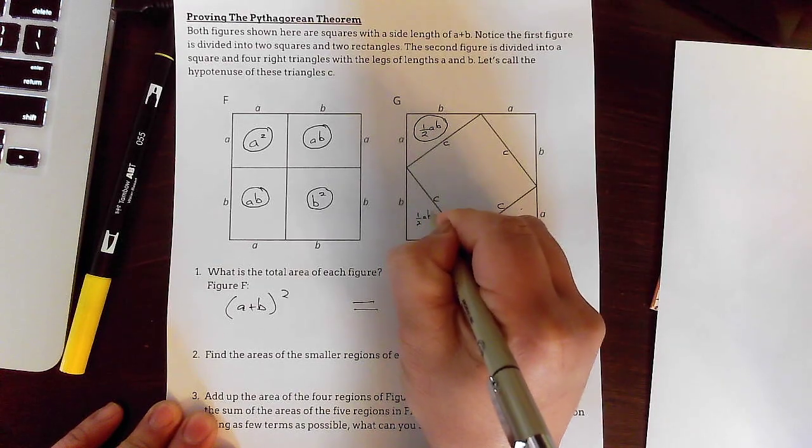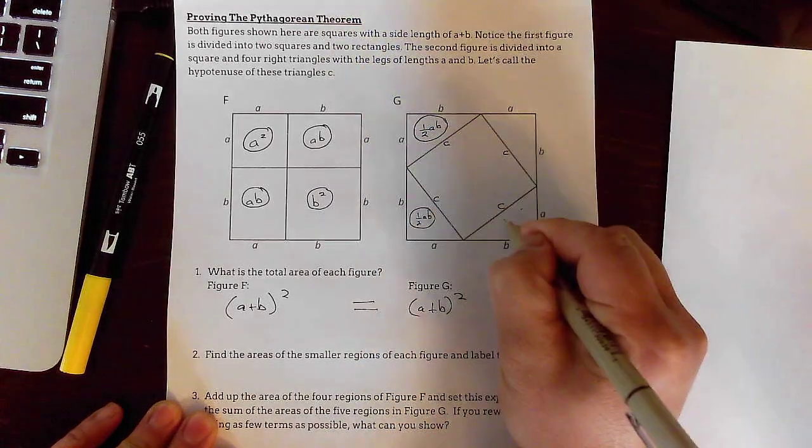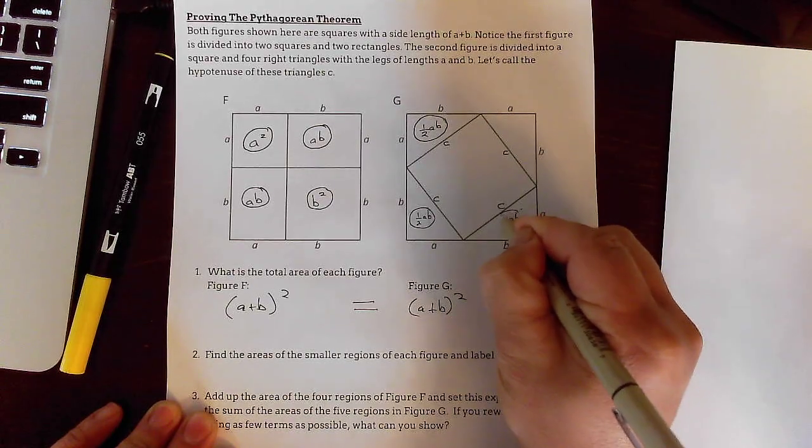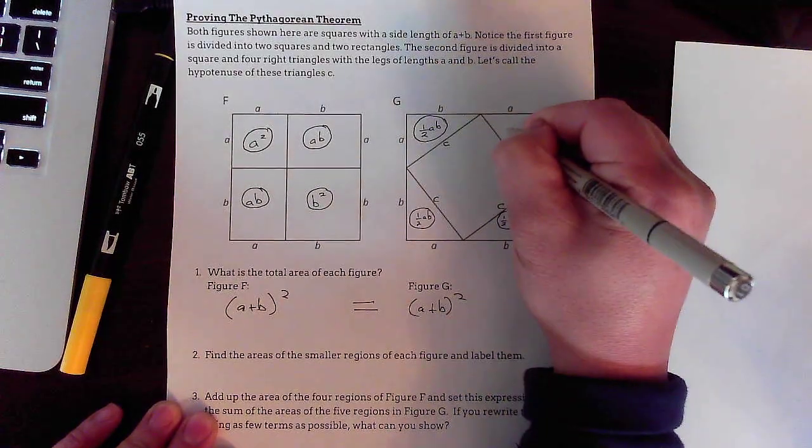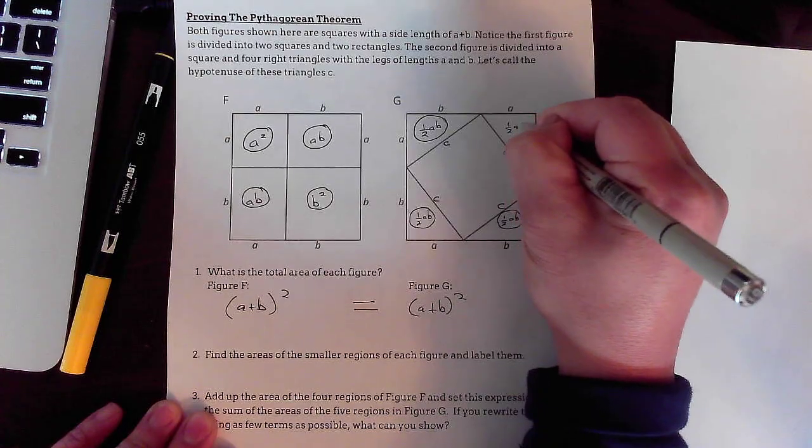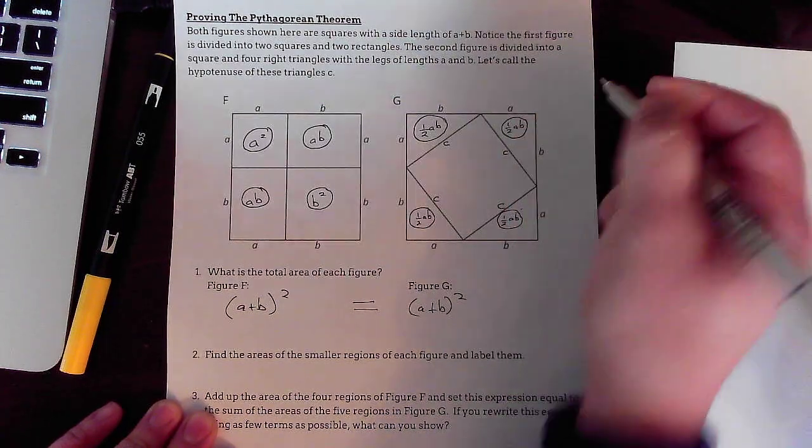So I'm just going to do that all the way around. One half AB, one half AB, and the last one, one half AB.